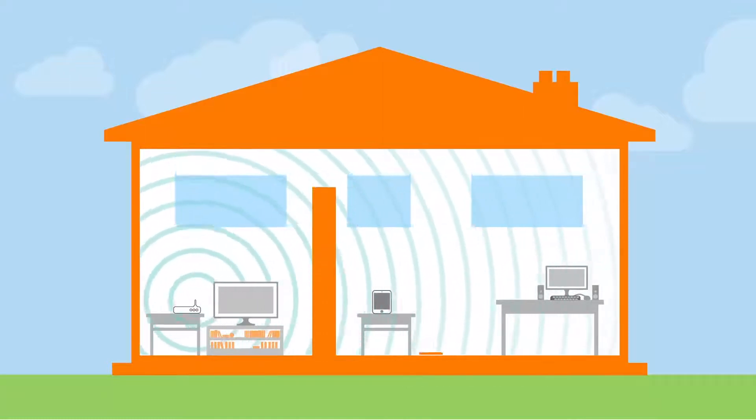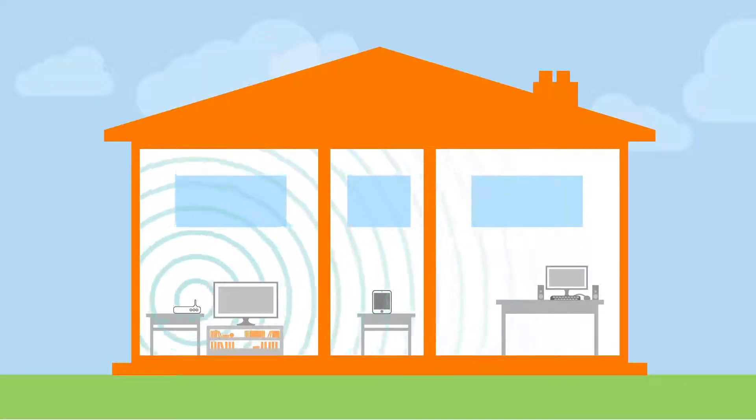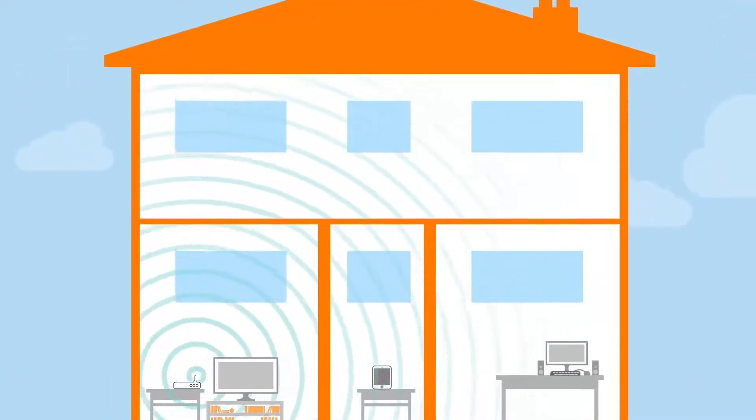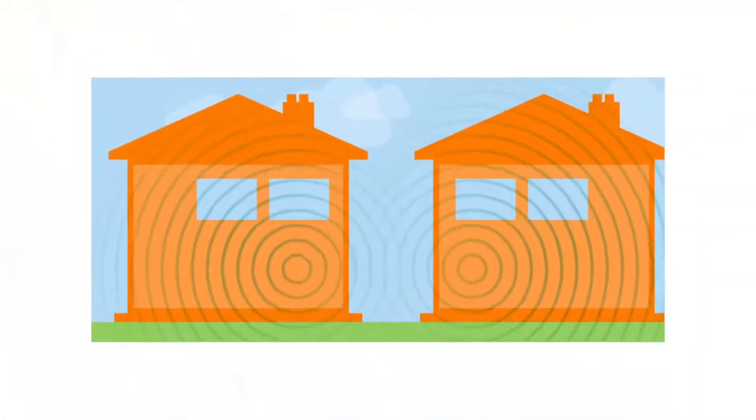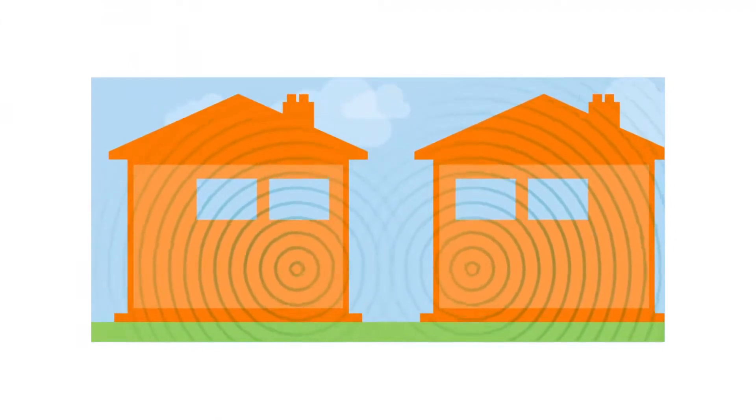WiFi is absorbed by the thicker walls found in many older houses. Foil lined insulated walls used in many modern houses can block it and ceilings can affect it too. Also your neighbor's WiFi radio signals can interfere with your WiFi radio signals and slow it down.